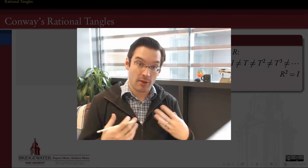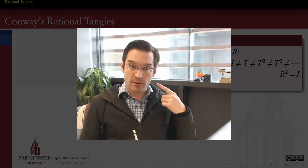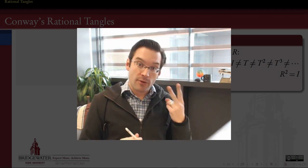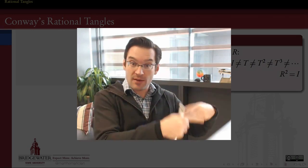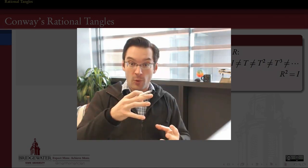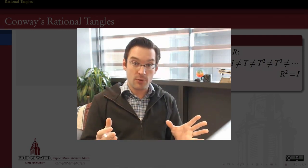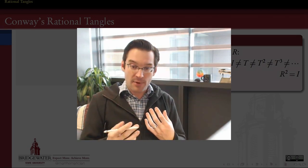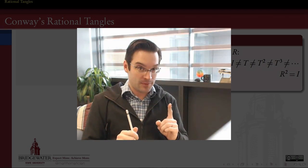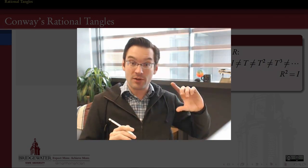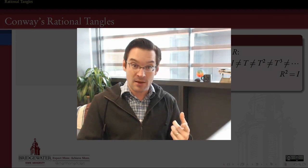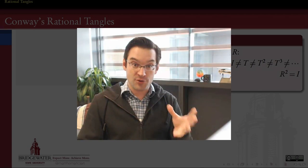We're beginning to build the operations in what we call the tangle group. So far we know three things. We know that twists and rotations do not commute — it matters if I twist first and then rotate or vice versa. Second, we know that the twist is an operation that has infinite order; we can keep twisting as many times as we want in succession and never get back to what we started with. Whereas rotations: once I do a rotation twice, I'm back to the same tangle — an equivalent, isotopic tangle — so we know how to undo a rotation by just doing one more rotation in succession.